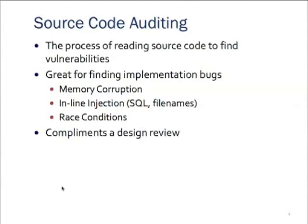So what is source code auditing? It's a process of reading source code to find vulnerabilities. It's great for finding implementation bugs. In a previous class, we discussed how to find architecture bugs — how to review a design to find logical faults in how an application was built. We're approaching this portion of the audit as though the design was solid and the developers had good intentions, but that there may have been bugs in how they implemented the design. We're looking for memory corruption, inline injection like SQL injection, file manipulation, or possibly race conditions. This form of auditing complements a design review to give you a robust way to attack and break an application when penetration testing.